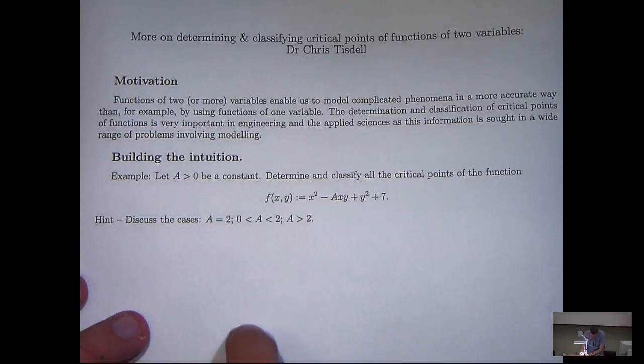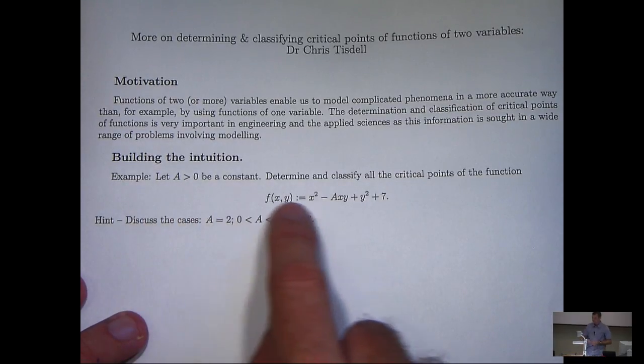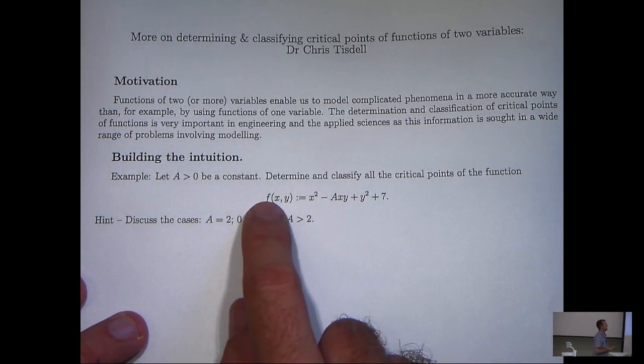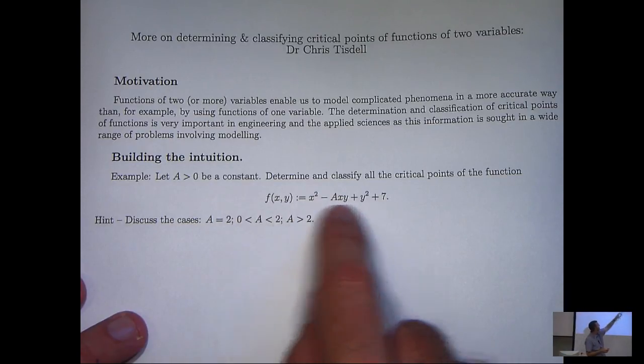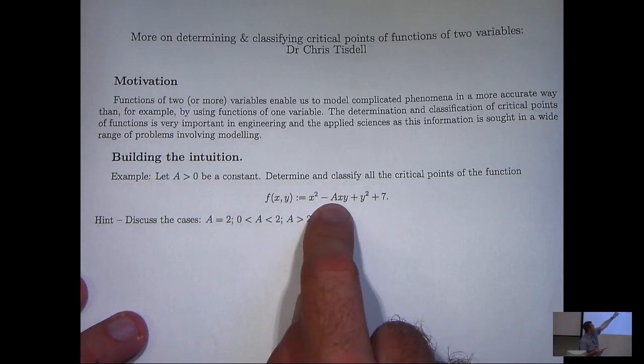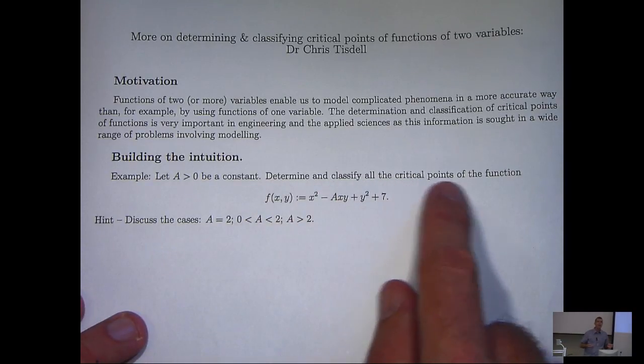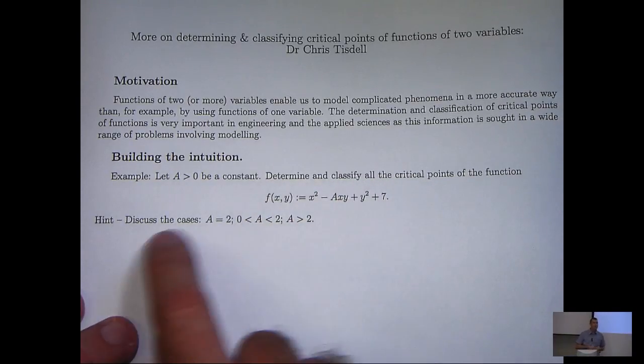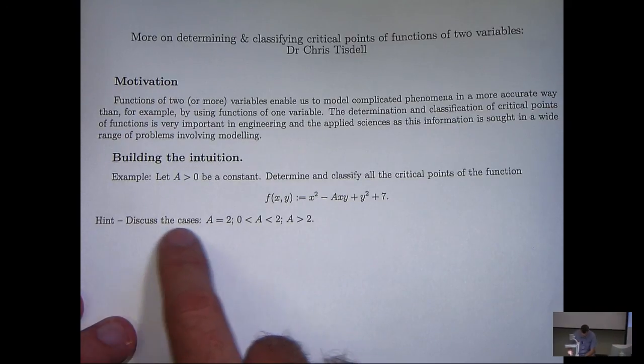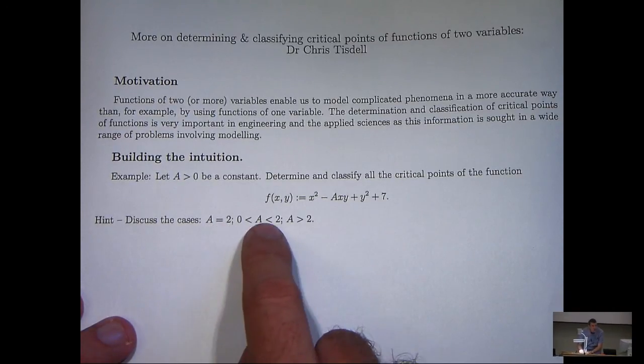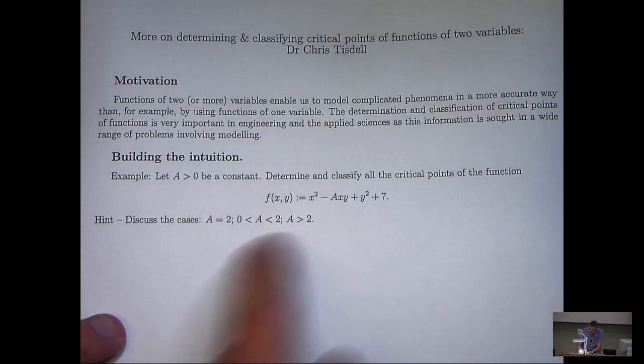Now the example that we're going to look at involves the following f, where a here is a positive constant and we're asked to determine and classify all of the critical points of this function. A little hint: discuss the cases a equals 2, a between 0 and 2, and a greater than 2 separately.